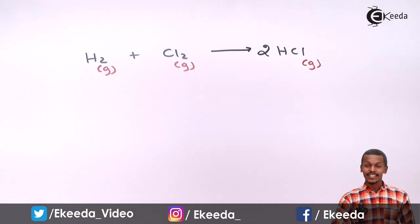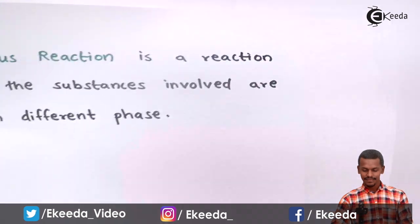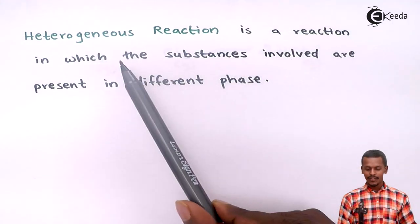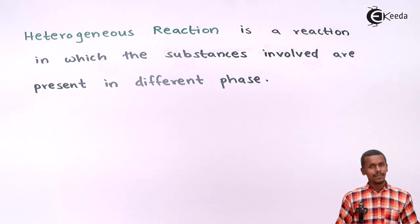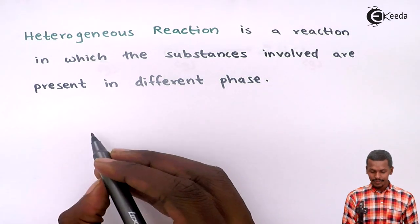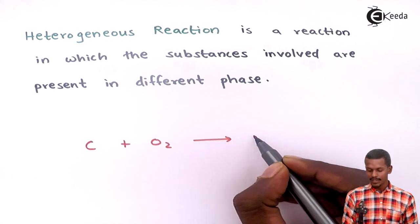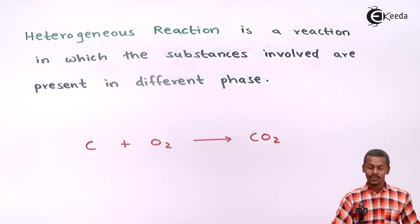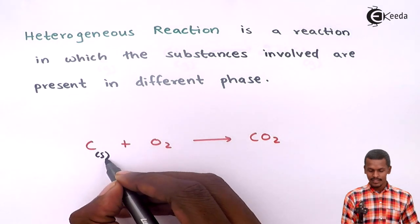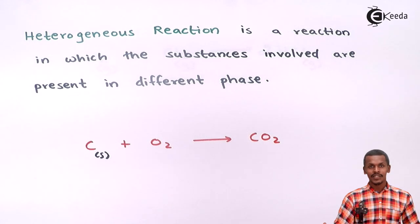Now let us look at heterogeneous reactions. A heterogeneous reaction is a reaction in which the substances involved are present in different phases. For example, when carbon reacts with oxygen it forms carbon dioxide. Carbon is present in a solid phase, while oxygen is always in a gaseous phase at room temperature.